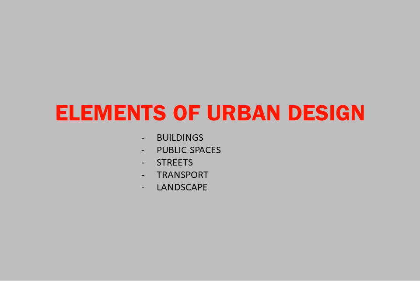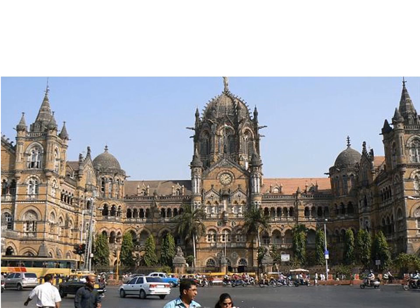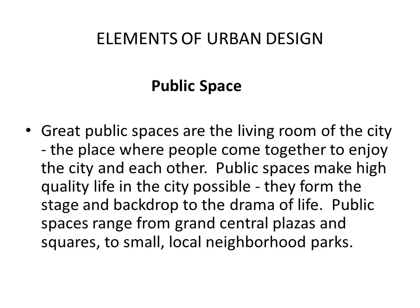What are the elements of urban design? We will go through five elements of urban design: buildings, public spaces, streets, transport, and landscape. The first element is buildings. Buildings are the most pronounced elements of urban design — they shape and articulate space, forming the street walls of the city. Well-designed buildings and groups of buildings work together to create a sense of place. This is an example of a building creating a sense of urban space; the facade going inside creates a space mostly used as a park, with a street in front. Around these buildings, urban paths and urban squares are created.